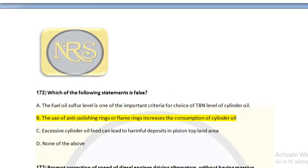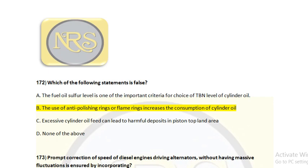Question number 172. Which of the following statements is false? Option A, the fuel oil sulfur level is one of the most important criteria for choosing the TBN level of cylinder oil; option B, the use of anti-polishing rings or flame rings increases the consumption of cylinder oil; option C, excessive cylinder oil feed can lead to harmful deposits in the piston top land area; option D, none of the above. For question number 172, option B is the correct answer.